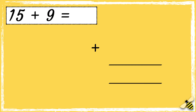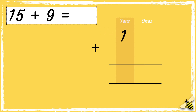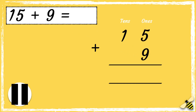Let's have a look at another example. Here is a number sentence: 15 add 9. Remember to line your numbers up correctly, so we have the tens in one column and the ones in another column. The number 15 has one ten and five ones. The number 9 has nine ones. Pause the video to give you time to work out the answer, then press play when you're done.